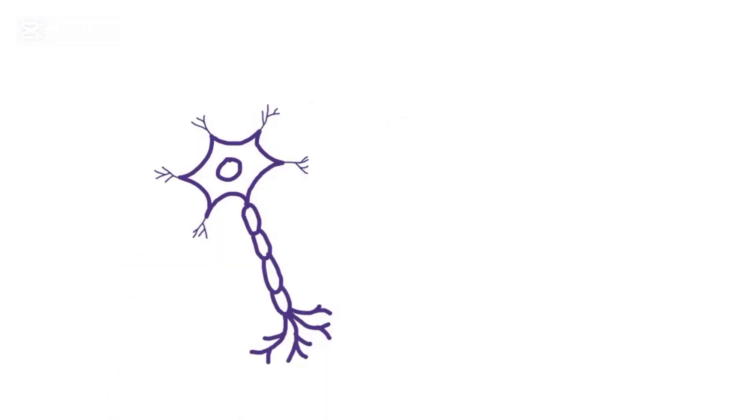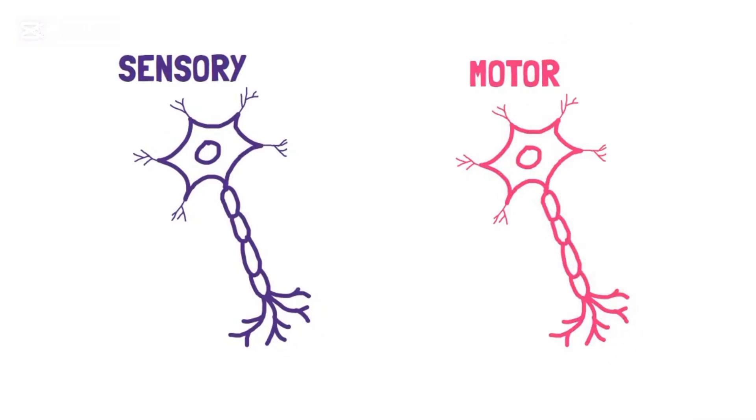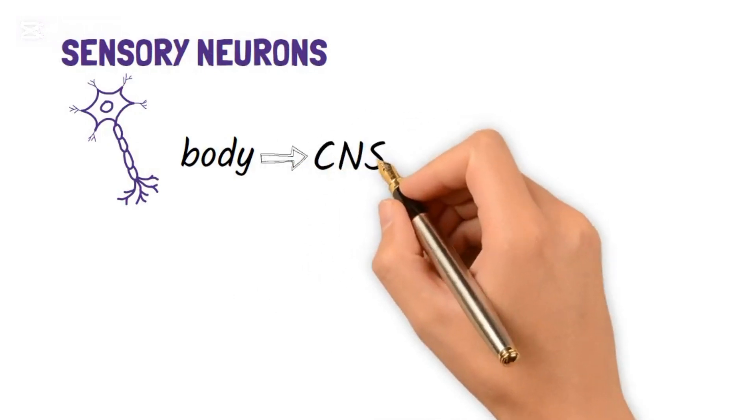In the Somatic Nervous System, there are Sensory Neurons and Motor Neurons. Sensory Neurons carry signals from the body to the central nervous system.